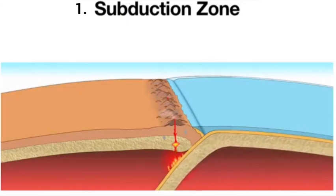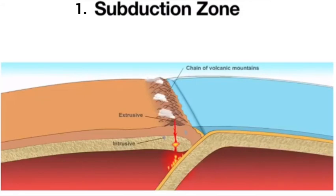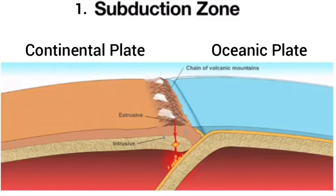What is a subduction zone? These are zones where, when two plates meet, the denser one is forced to sink downward beneath the other plate. Depending on the types of plates involved, there are two types of subduction plate boundary.